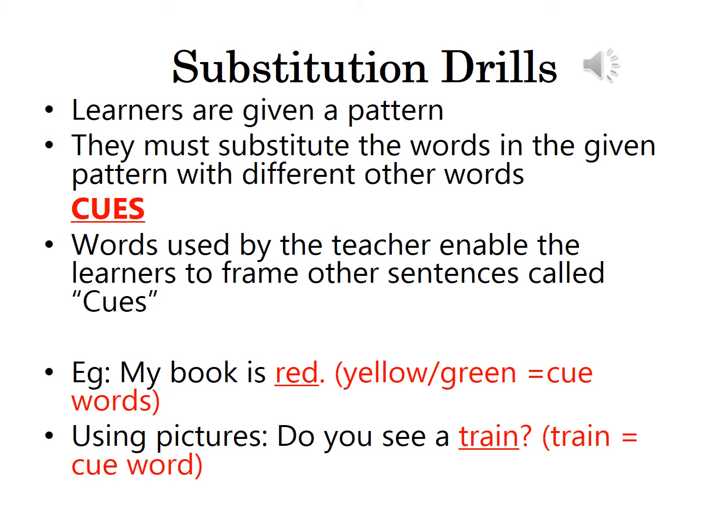Substitution drills: learners are given a pattern and must substitute words in the given pattern with different other words. We call them cues. The words used by the teacher will enable the learner to frame new sentences, and we call these words cues. For example, take the sentence 'My book is red.' Here you can replace the word 'red' using 'yellow' or 'green.' The words that a speaker uses to substitute the word 'red' — we call 'yellow' and 'green' as cue words.